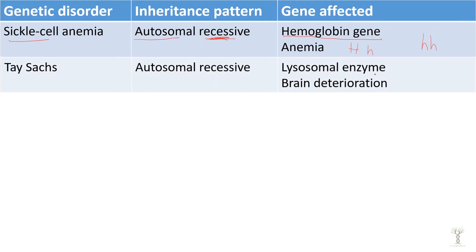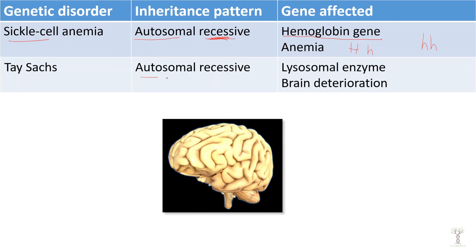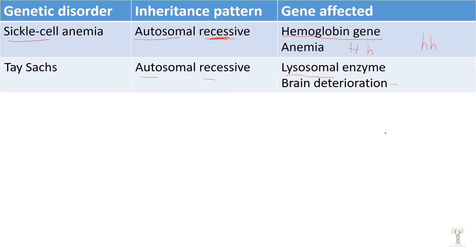Our next example is called Tay-Sachs. This is also autosomal and it's also recessive. This affects an enzyme that is found in lysosomes, and it causes brain deterioration. Those affected most commonly die within the first few years of life.